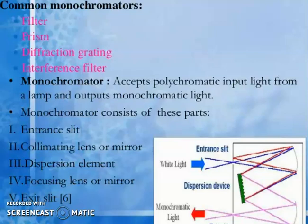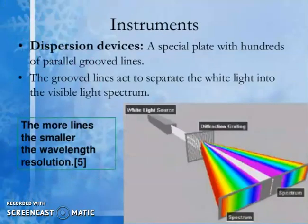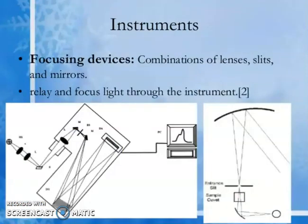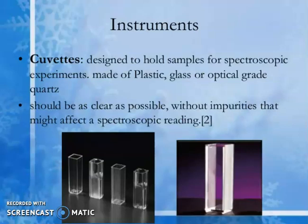The monochromator accepts polychromatic input light from a lamp and outputs monochromatic light. It consists of a collimating lens or mirror, dispersion elements, focusing lens or mirror, and exit slits. The diffraction grating is a special plate with hundreds of parallel grooved lines that separate white light into the visible spectrum — the more lines, the smaller the wavelength resolution. The focusing device is a combination of lenses, slits, and mirrors that relay and focus light through the instrument. Cuvettes designed to hold a sample for spectroscopic measurement are made of plastic, glass, or optical-grade quartz and should be clear.